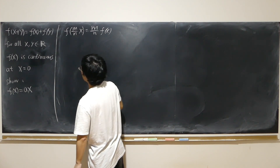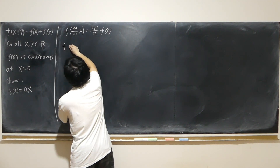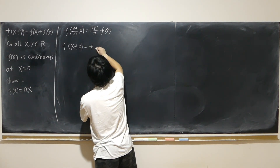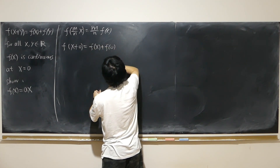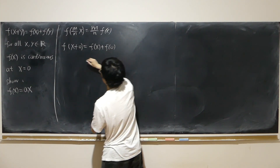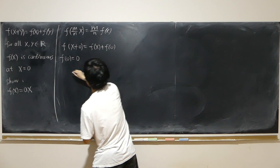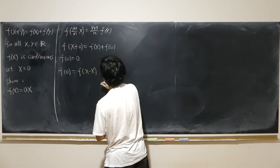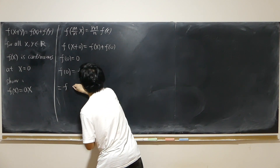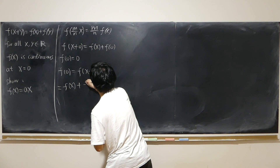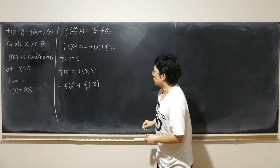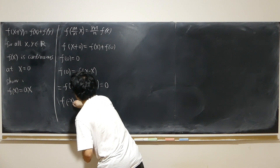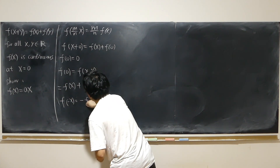So far we've shown this for every positive rational. Now let's look at f of 0. We have f of x plus 0 equals f of x plus f of 0, but that's also just f of x, so f of 0 equals 0. Also, f of 0 equals f of x plus (−x), which equals f of x plus f of negative x, and since that equals 0, f of negative x equals negative f of x.